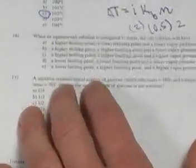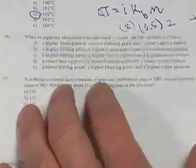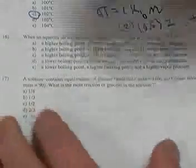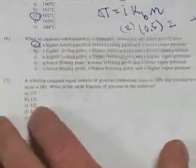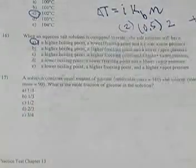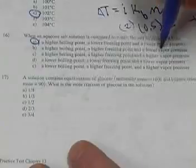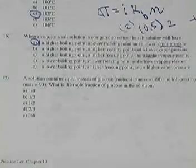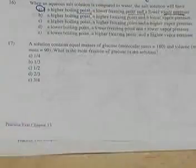Number 16: when an aqueous salt solution is compared to water, the salt solution will have a higher boiling point, a lower freezing point, and therefore a lower vapor pressure. Remember, boiling is not a consequence of temperature — temperature is a consequence of boiling. Lowered vapor pressure makes it more difficult to boil. Always remember: boiling point elevation and freezing point depression make the substance stay in its liquid phase longer.